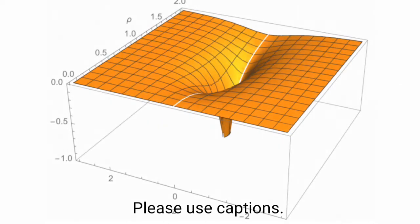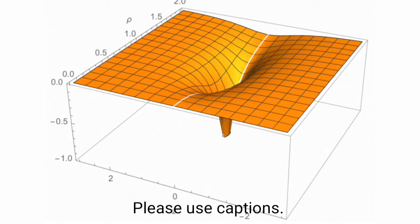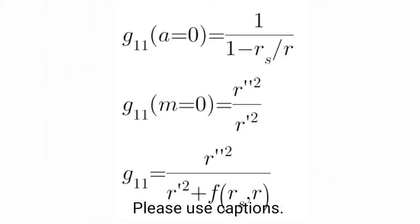Now what happens when mass curves the spacetime? So, we first prefer the first dimension, radial dimension. So when moment turns zero, it reduces to Schwarzschild. When mass turns zero, it reduces to spheroidal coordinates. So we define a function, which is dependent on mass and radius like this.